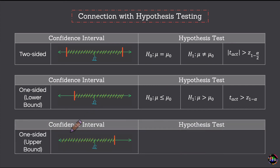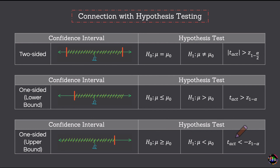For the one-sided confidence interval based on the upper bound — which extends to minus infinity on the left — you would use it to conduct a left-tailed hypothesis test. The rule is the same: build the one-sided CI from mu hat, check if mu0 falls inside it, and if it does, you cannot reject the null hypothesis. This video covered one-sided confidence intervals and showed how the logic of the two-sided confidence interval extends naturally to one-sided cases.